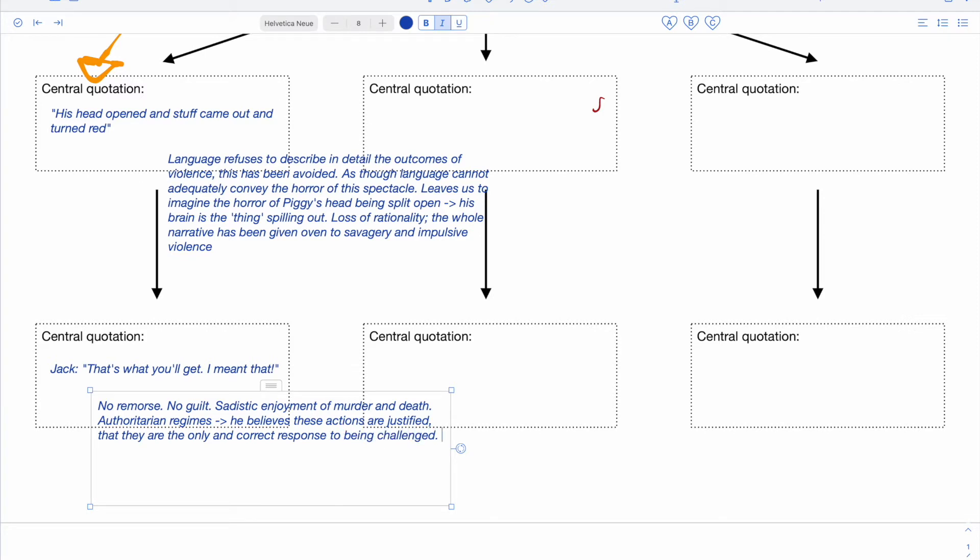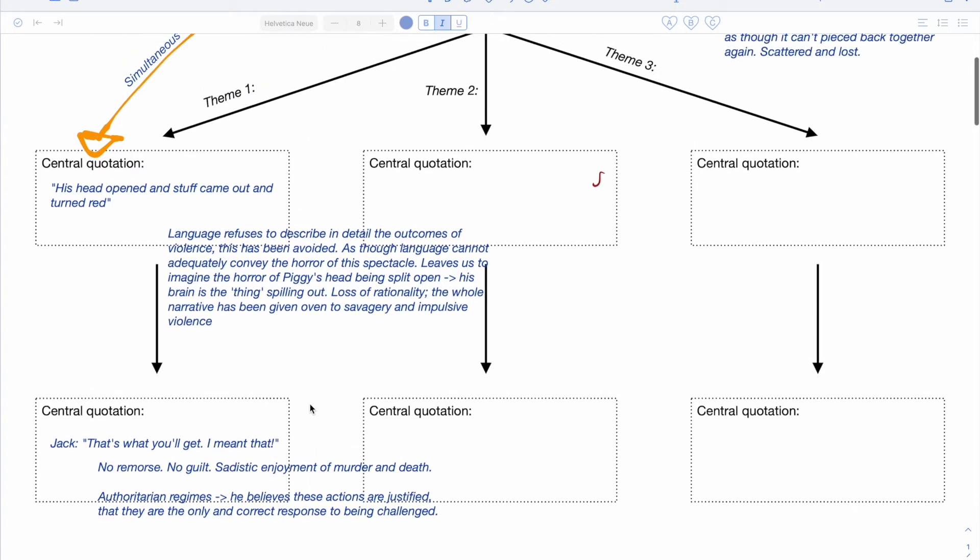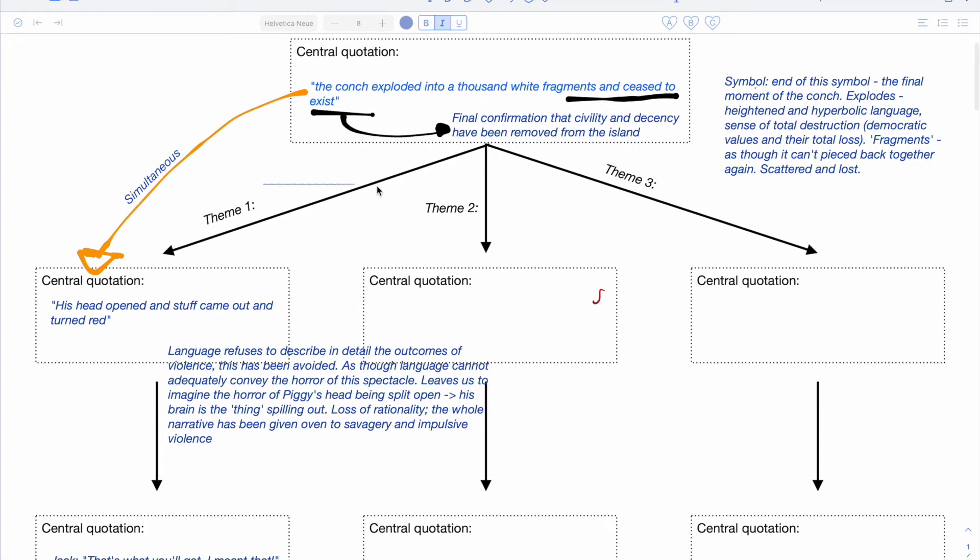Ralph talks about just wanting to go back up and get Piggy's stuff back, Piggy's glasses back. That's one of the reasons for going up there, so that Piggy can see. But again, authoritarian regimes respond to reasonable actions, reasonable requests, with acts of violence in this way, as though they are justified, as though they are okay, and they can just do what they want. And there is definitely that sense of enjoyment of this moment as well, with that lack of remorse being shown. So again, tracing and tracking these through, you could talk about this theme being one of violence. You can talk about savagery versus civility.